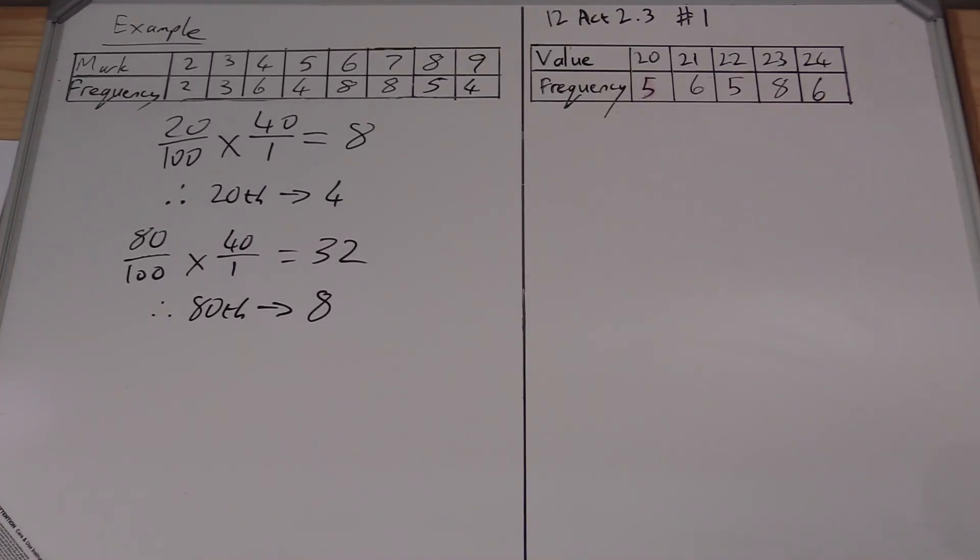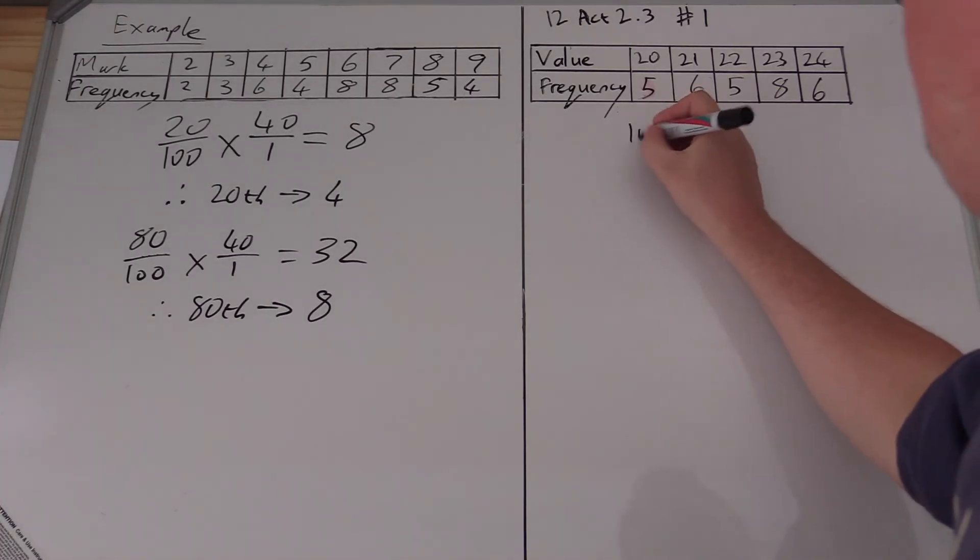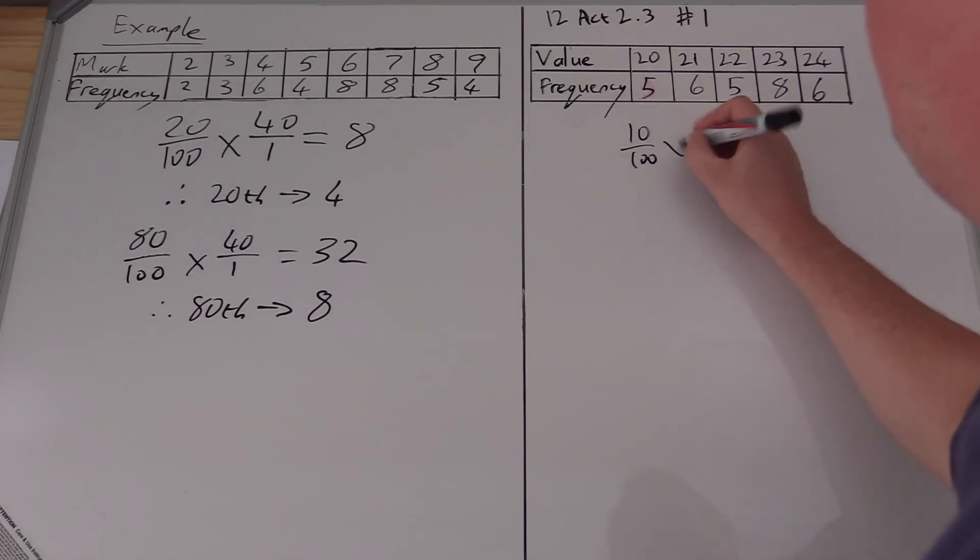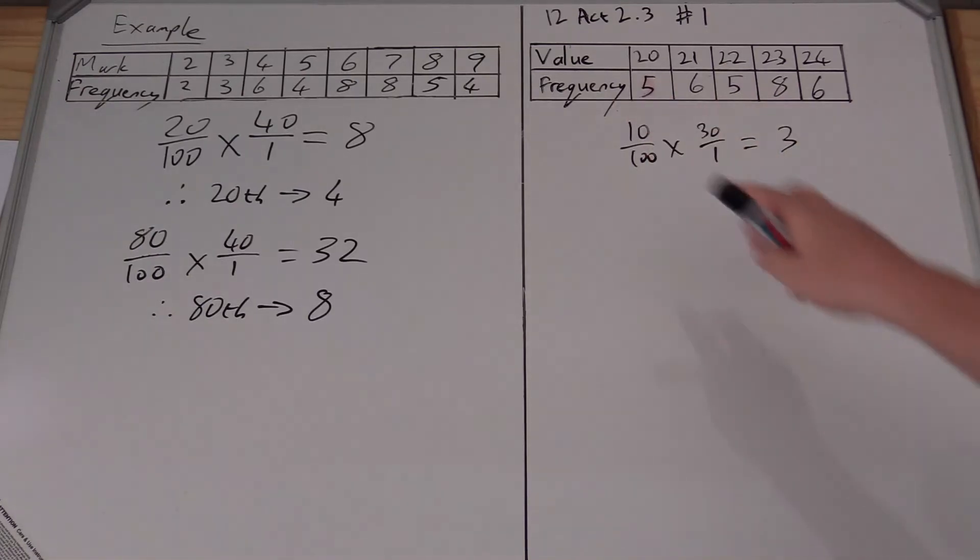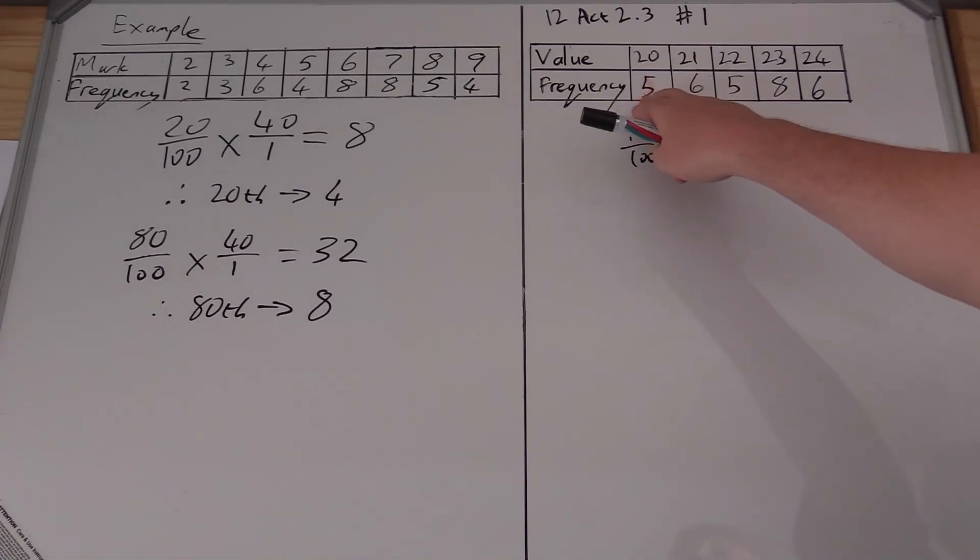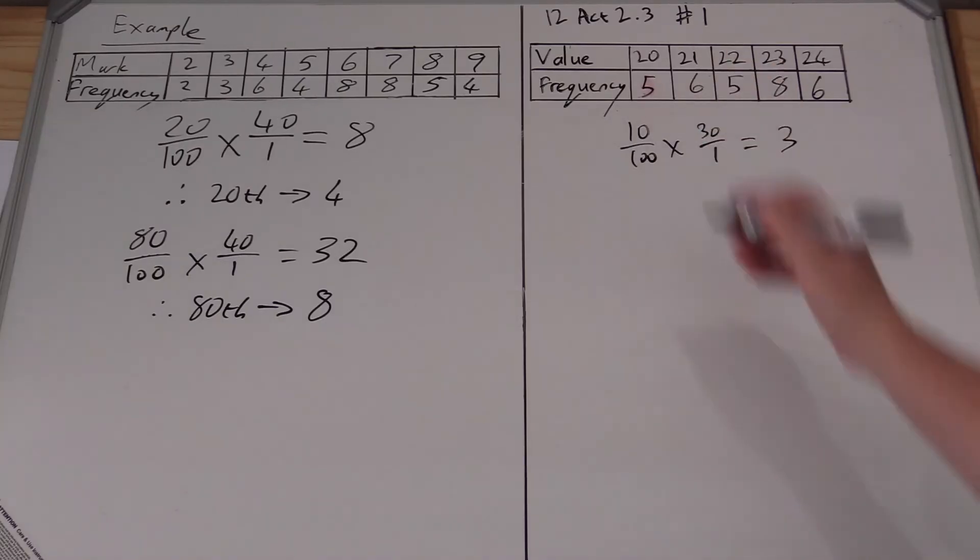Now let's take a look at what my 10th percentile would be because that's what they're looking for. Here I will take 10 over 100 times by 30 over 1, which gives me my third position. My third position, 1, 2, 3, is sitting in that section of my frequency table there. Therefore my 10th percentile is at the value of 20.